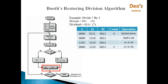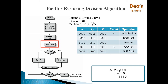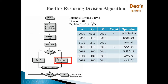Then the count is decremented — count will become 3. Count is not equal to 0, so we go up again. Shift left A,Q: this 0 will go out, giving 0,0,0,1,1,1,0 and a new 0 is added. Then A equals A minus M: 0,0,0,1 plus 2's complement of M 1,1,0,1 gives 1,1,1,0. MSB of A is 1 again, so A is less than 0 — restore again. The value will be restored and Q0 will become 0.